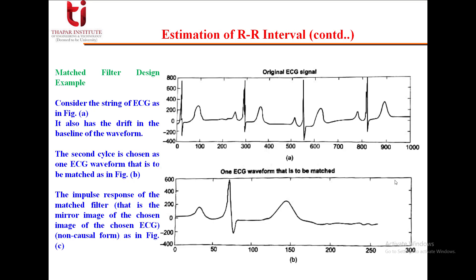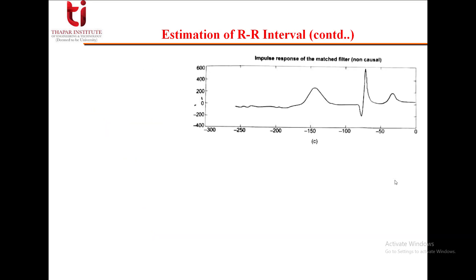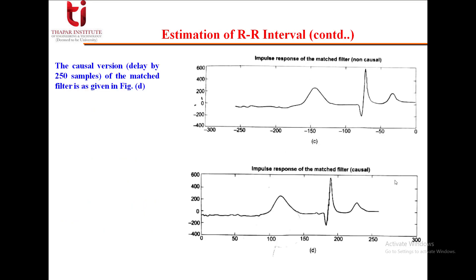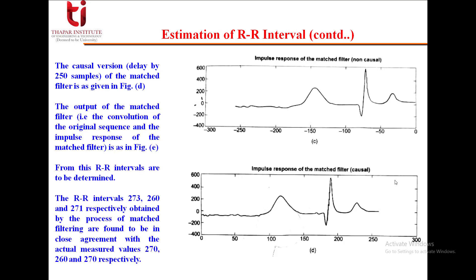The impulse response of the matched filter is the mirror image of the chosen ECG in non-causal form. We have taken the mirror image in non-causal case. We want that to be shifted in causal case, so the causal version, delayed by 250 samples of the matched filter, is shown in figure D. The output of the matched filter, the convolution of the original sequence and the impulse response of the matched filter, is shown in figure E.